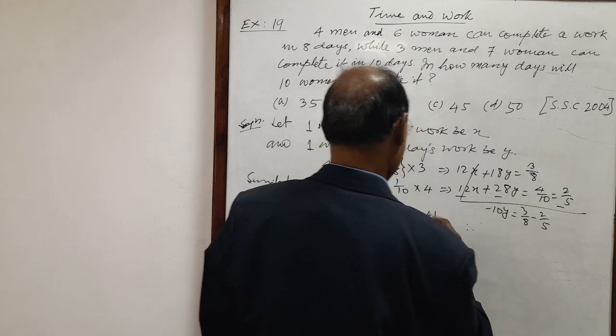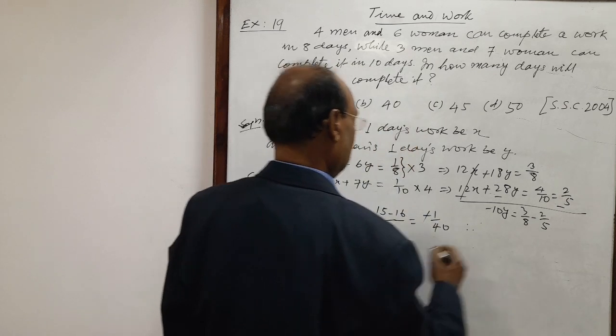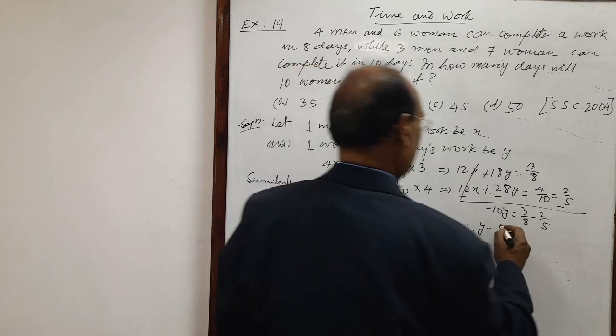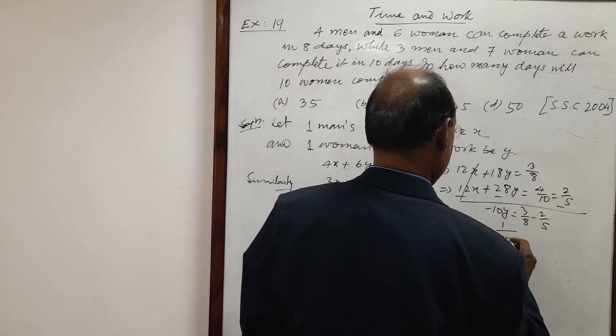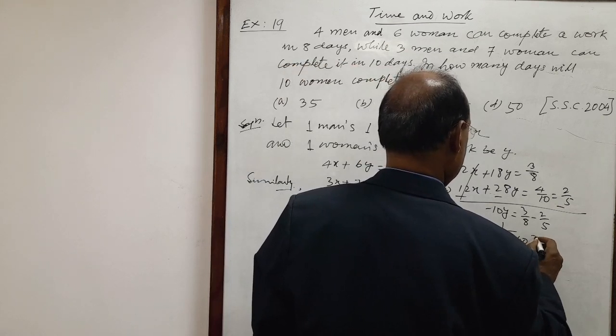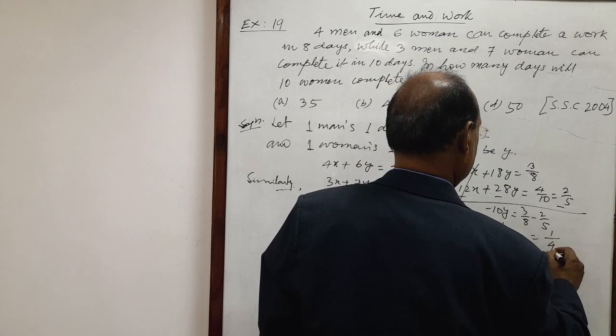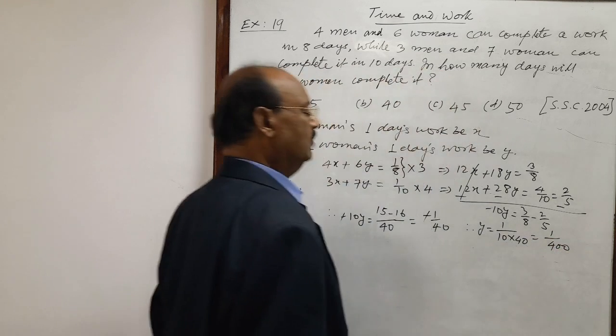Minus 10y is minus one by forty. So this minus sign will be cancelled out. And y is equal to how much? One by ten into forty. This is equal to one by four hundred. This is value of y.